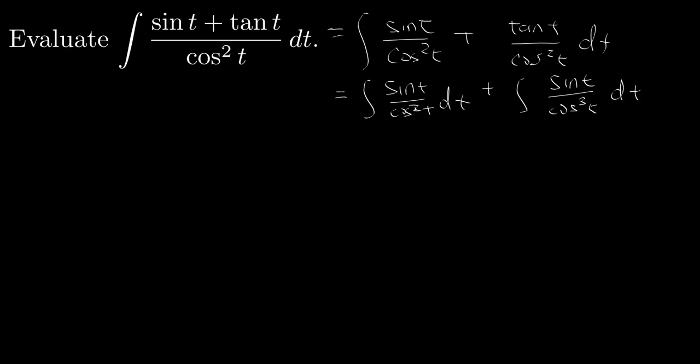Now both of these integrals can be evaluated using the same substitution: u equals cosine t. The reason this works is because both of them have a sine in the numerators, and du equals minus sine t dt.